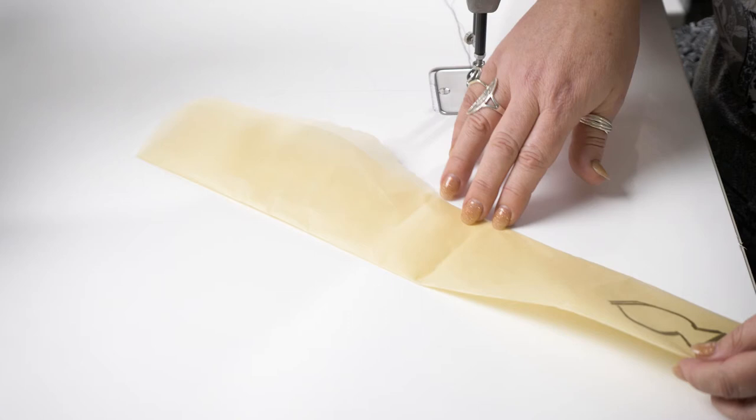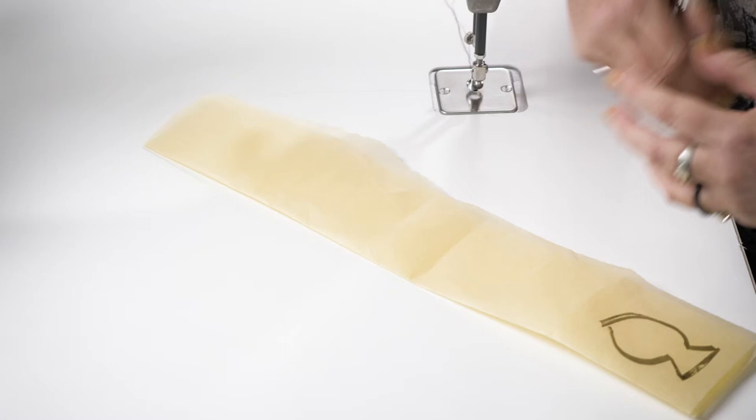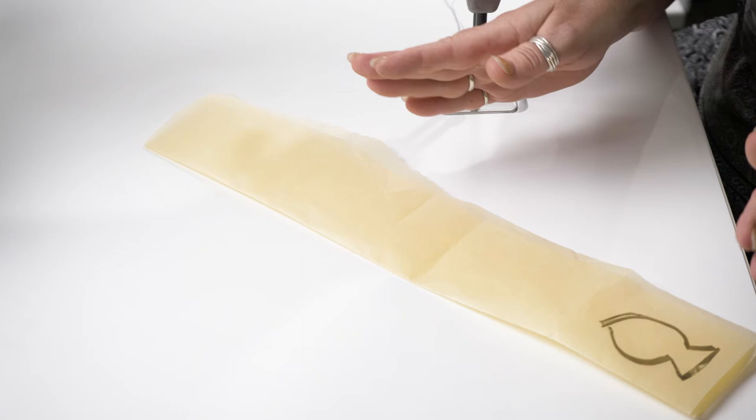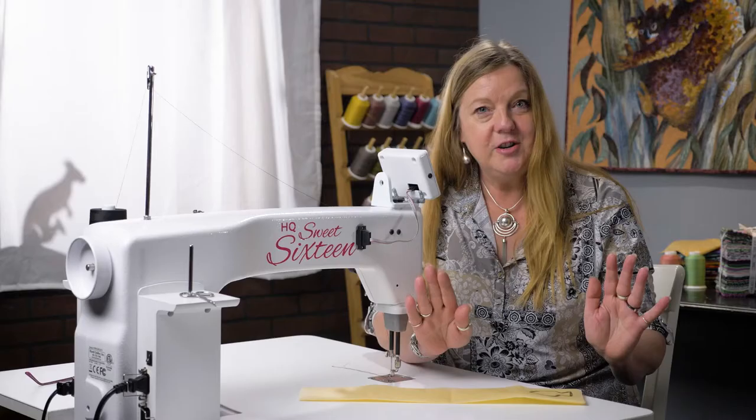Now with the little fish, he's directional. So he's going to be facing nose to nose or tail to tail. If you didn't want a design like that that was directional, you'll do something like a flower or something that it doesn't matter. As it's repeated, it's going to be exactly the same each time.